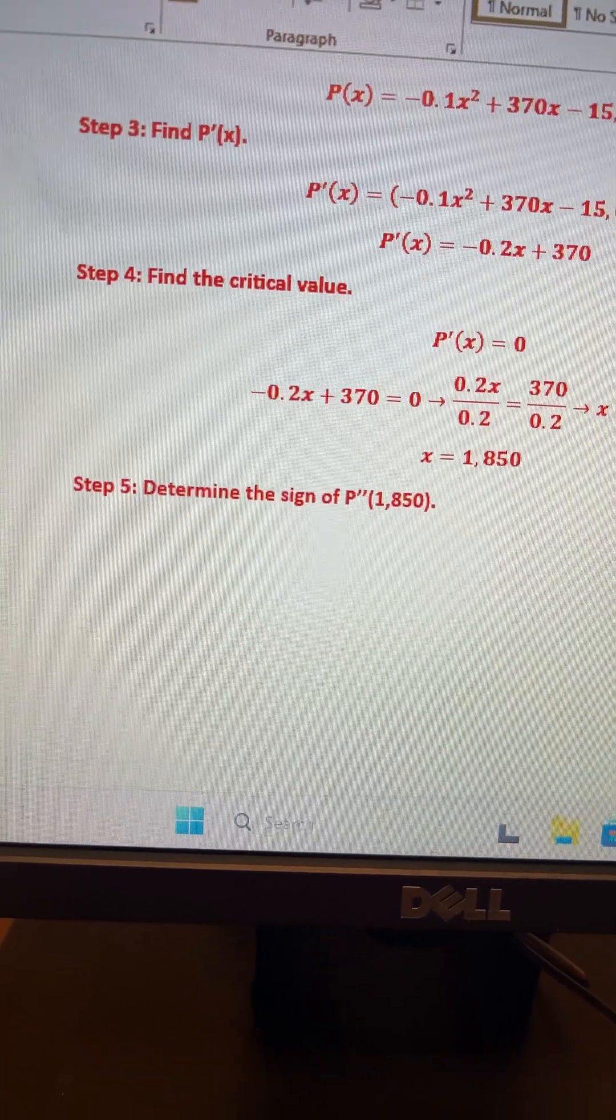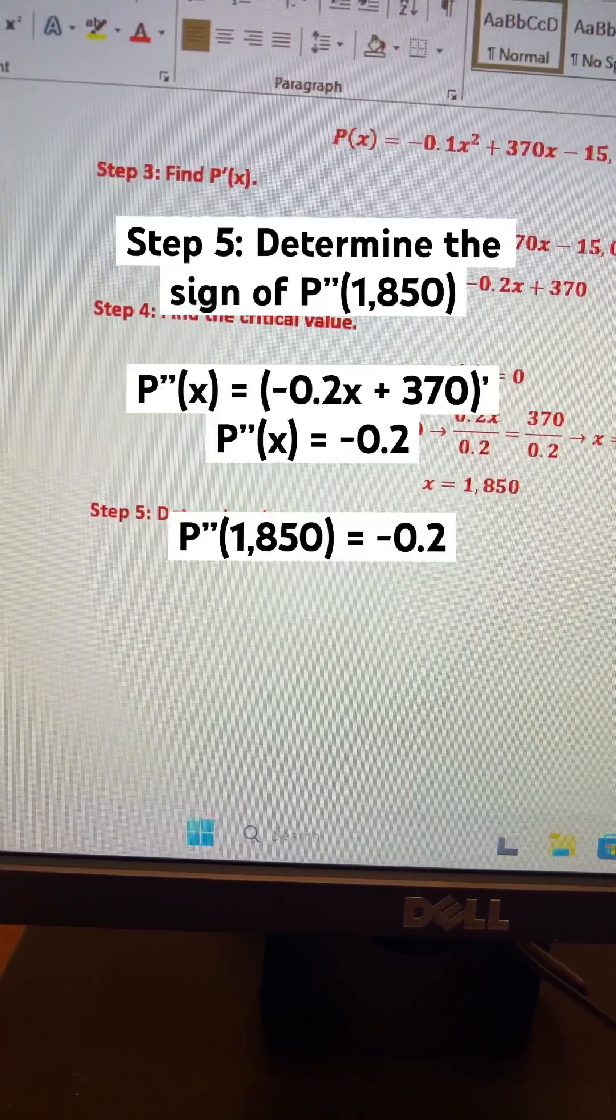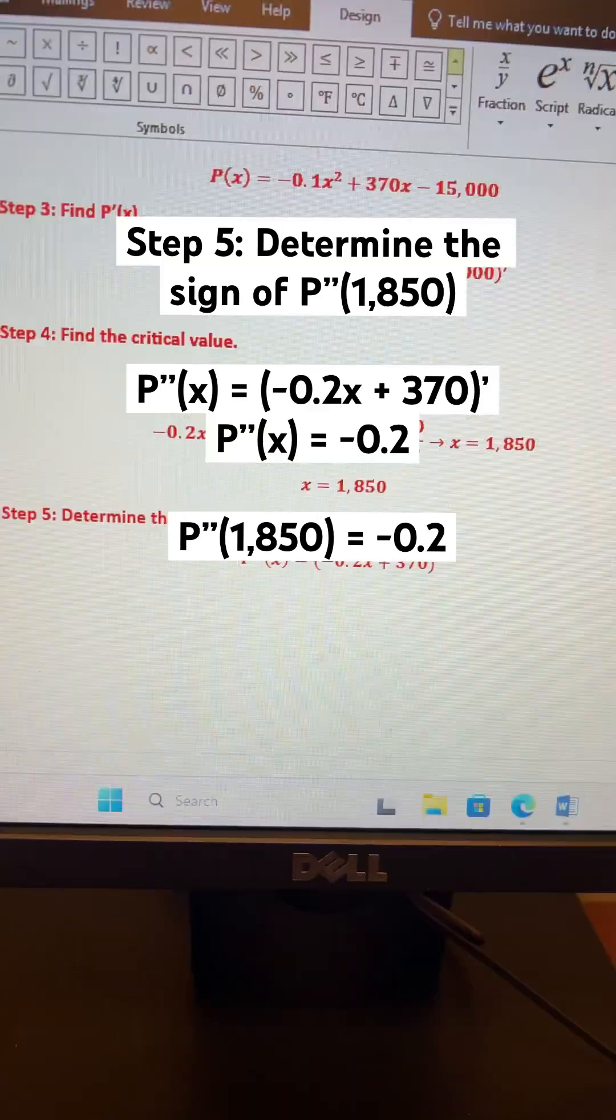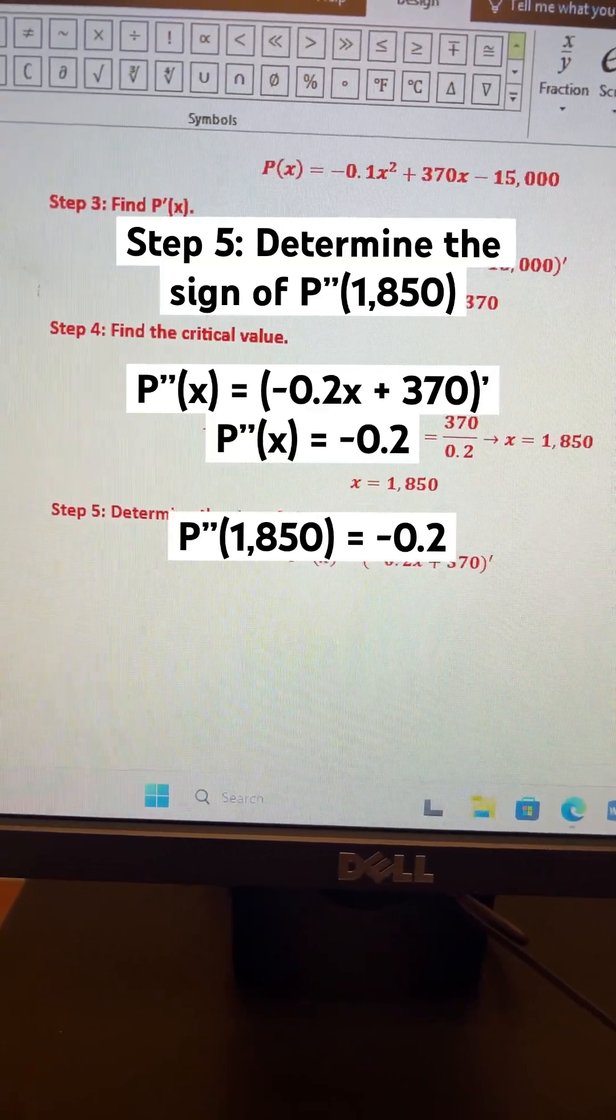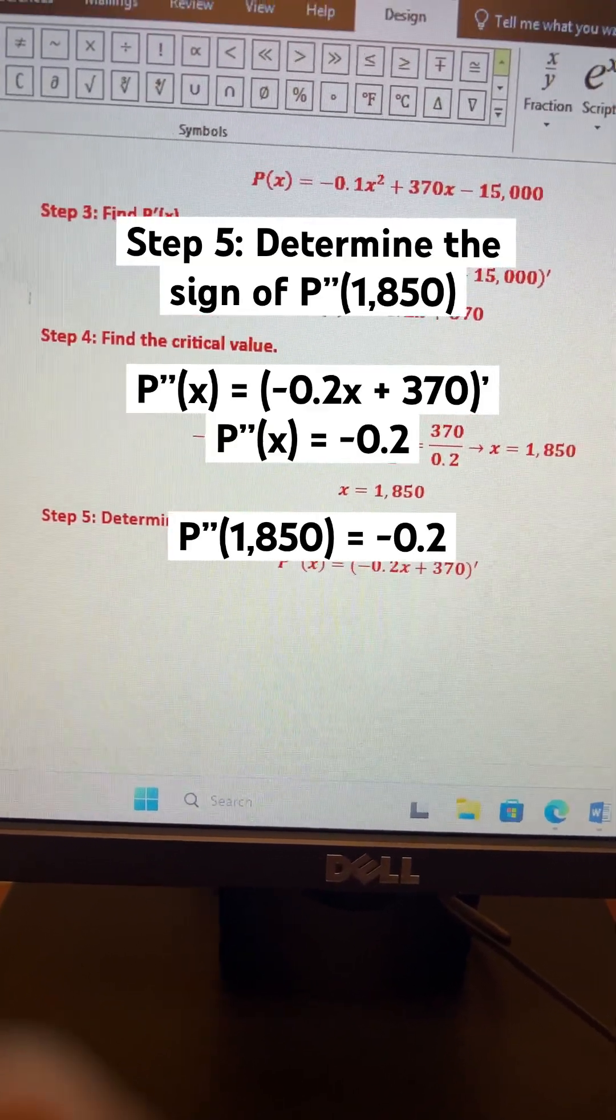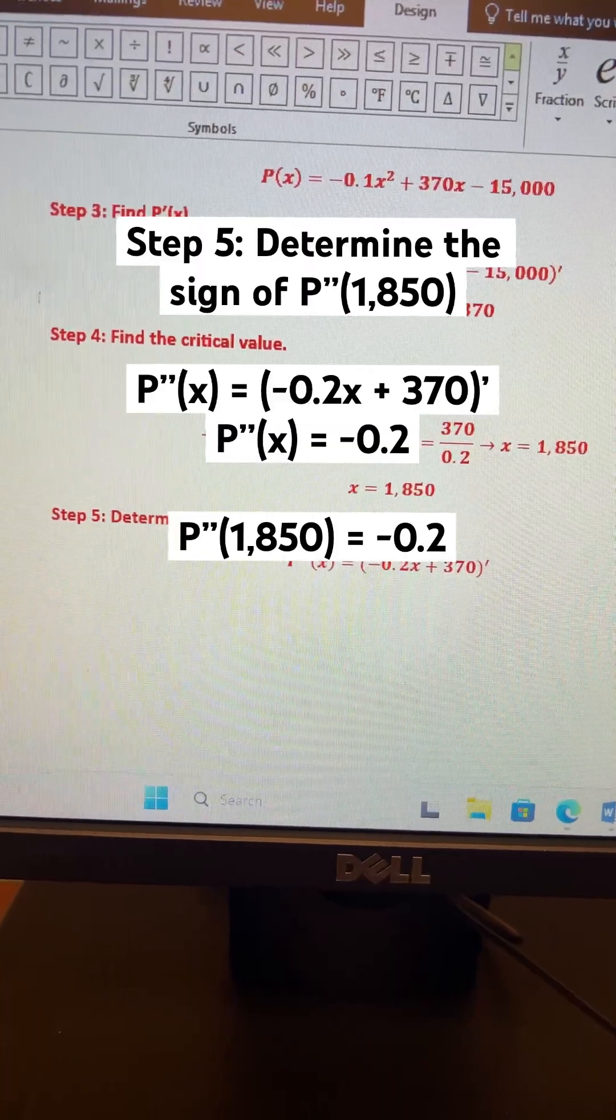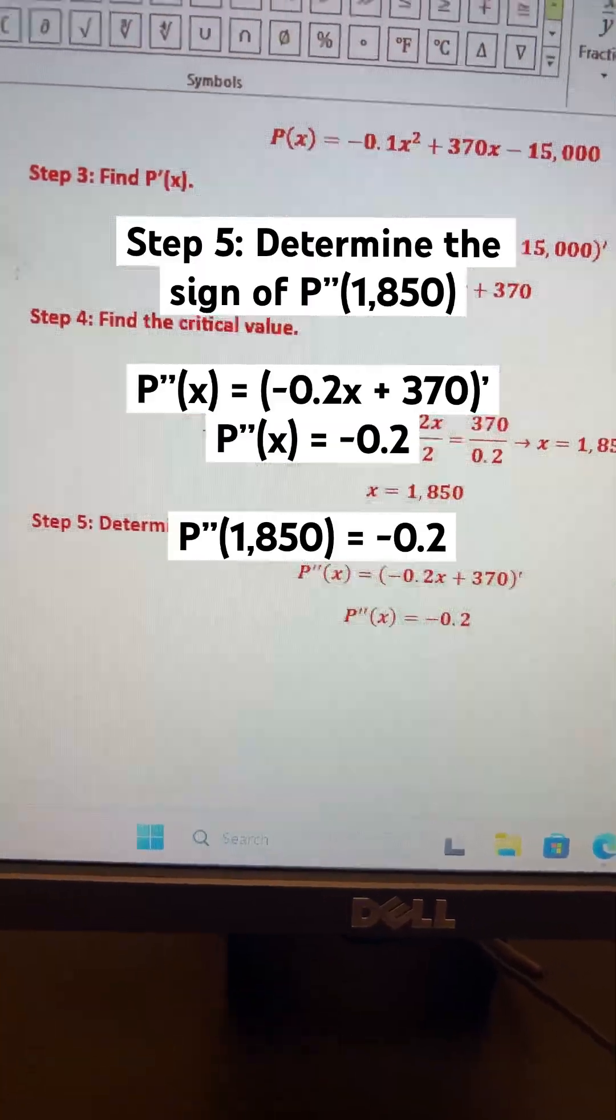Now step 5 is to determine the sign of the second derivative P''(1850). And of course, first before you do that, you've got to determine what the second derivative of P(x) even is. And go figure, it's negative 0.2.